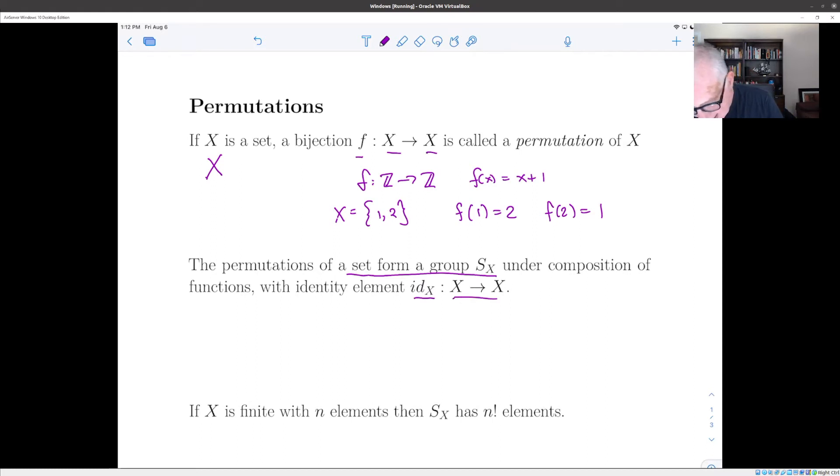So remember that the identity map takes an element of the set X and just gives it back to you. And the reason such functions form a group is because, first of all, composition of functions is associative.